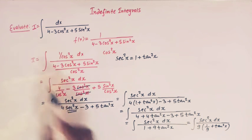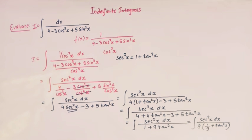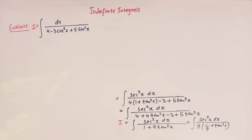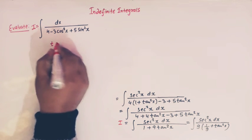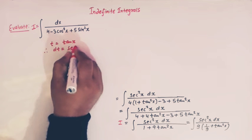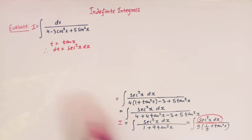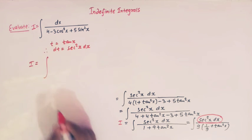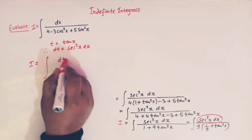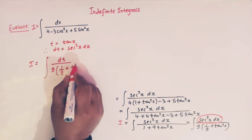This integral now reduces to a form where we can use the method of substitution. We take t equal to tan x, so dt equals sec squared x dx. Since sec squared x dx is present in the numerator, the integral I becomes dt over 9 times (1/9 plus t squared).